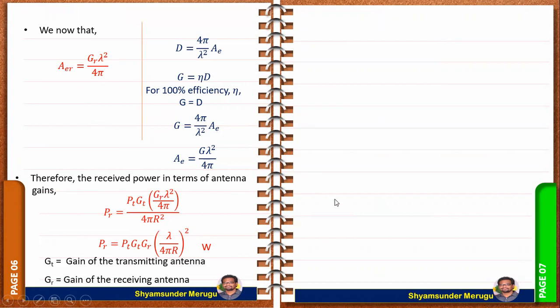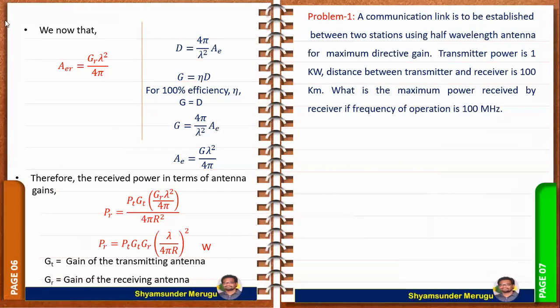In this expression, GT is the gain of the transmitting antenna and GR is the gain of the receiving antenna. Let us now look at a numerical problem on the Friis transmission formula.